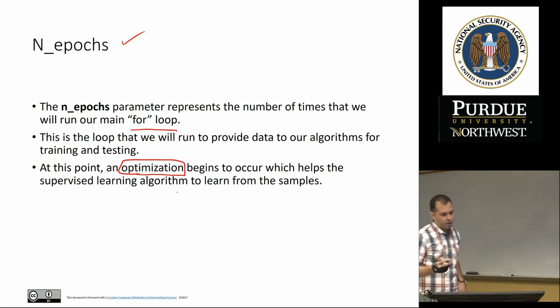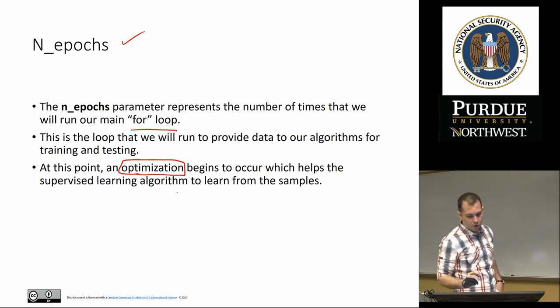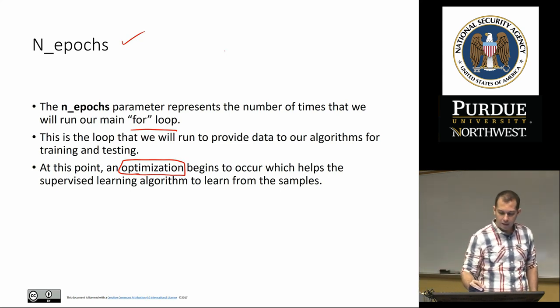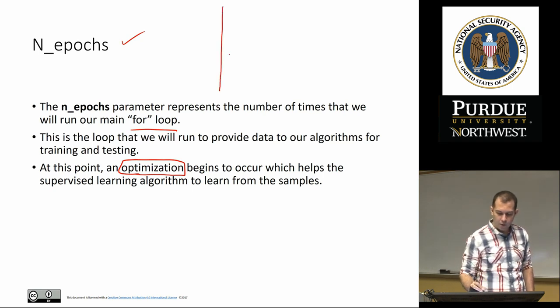In summary, we know that for defining our deep learning code we have a for loop: for i in range(n_epochs).